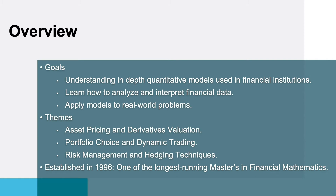There are three main themes in the program. One theme is asset pricing and valuation of financial products that are dependent on the prices of other financial products, such as derivatives. Another important theme is portfolio choice, optimal investment and dynamic trading — the asset allocation issues that are important both for individuals and for institutions. And finally, risk management and hedging, which is a key component of the financial industry today. You not only take positions in financial products — you also need to manage risk and hedge these positions.